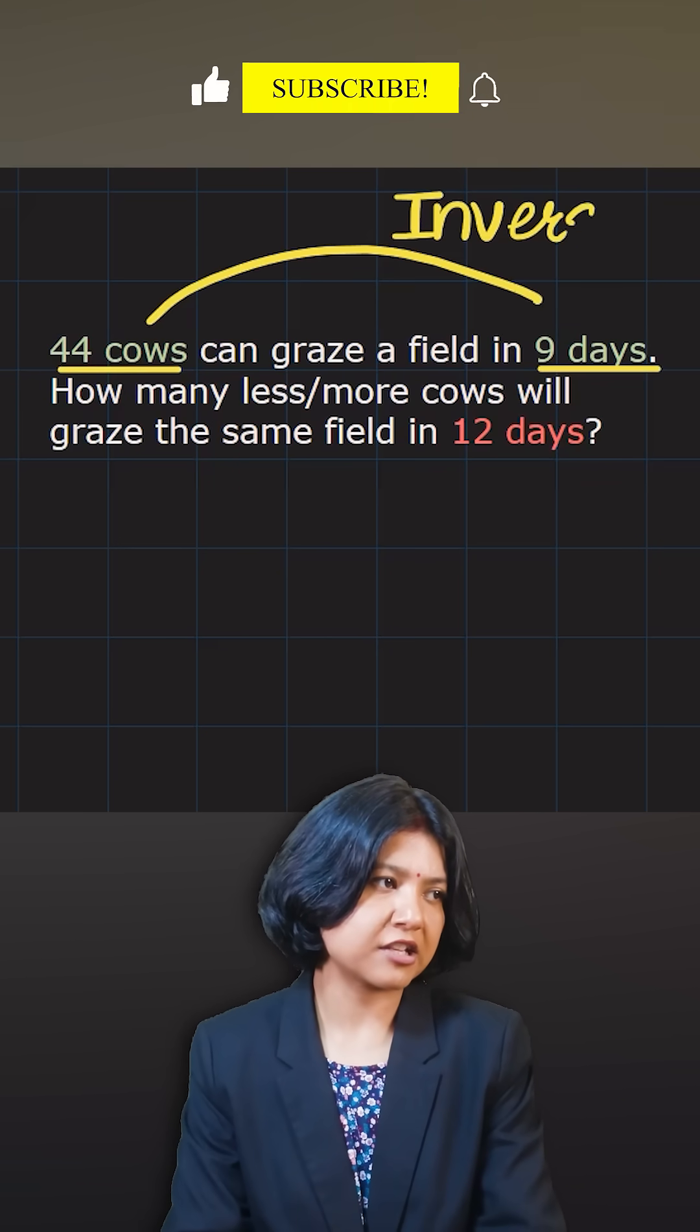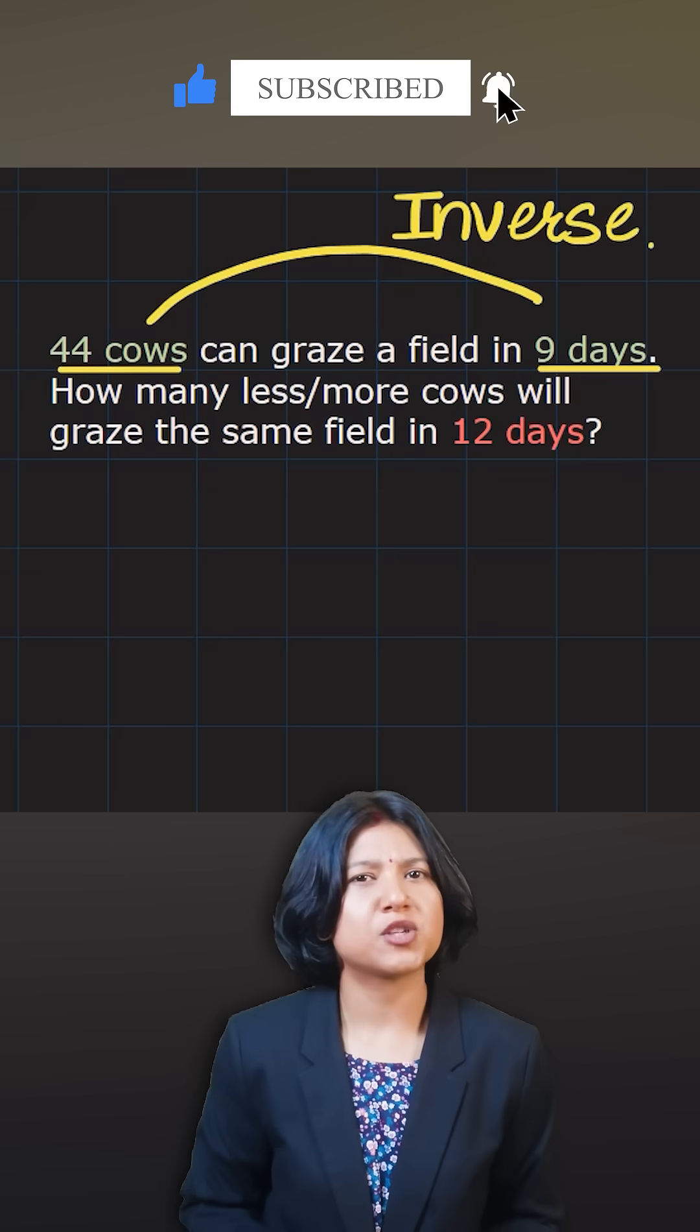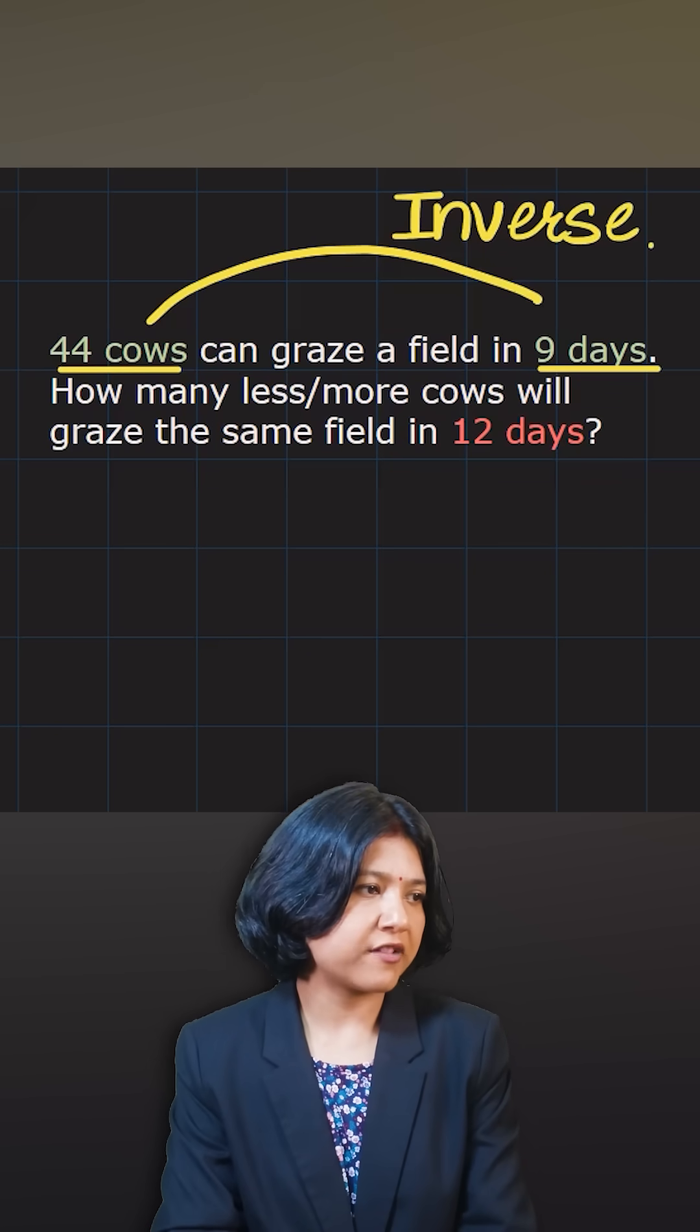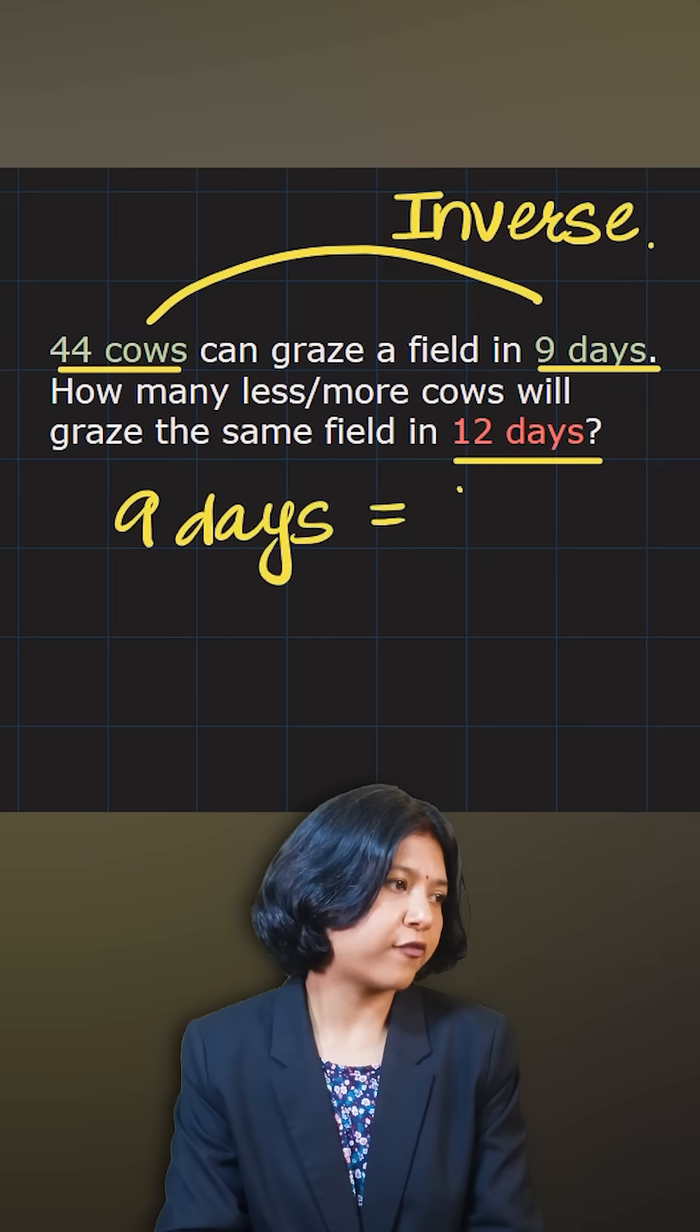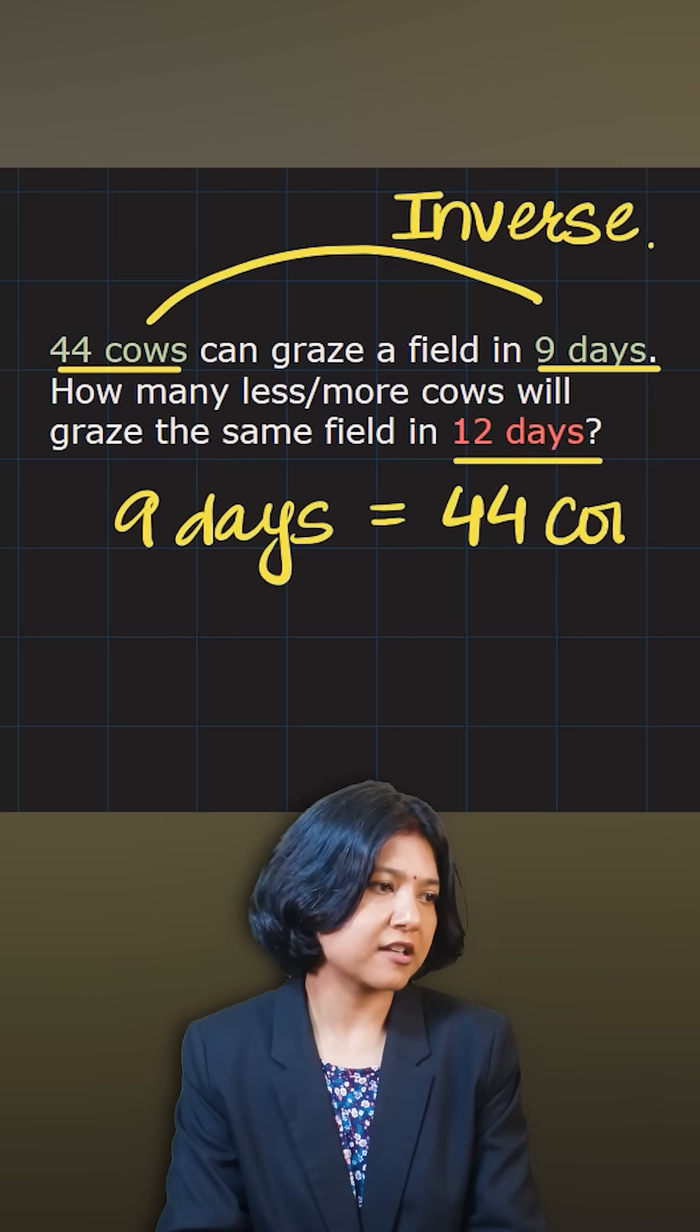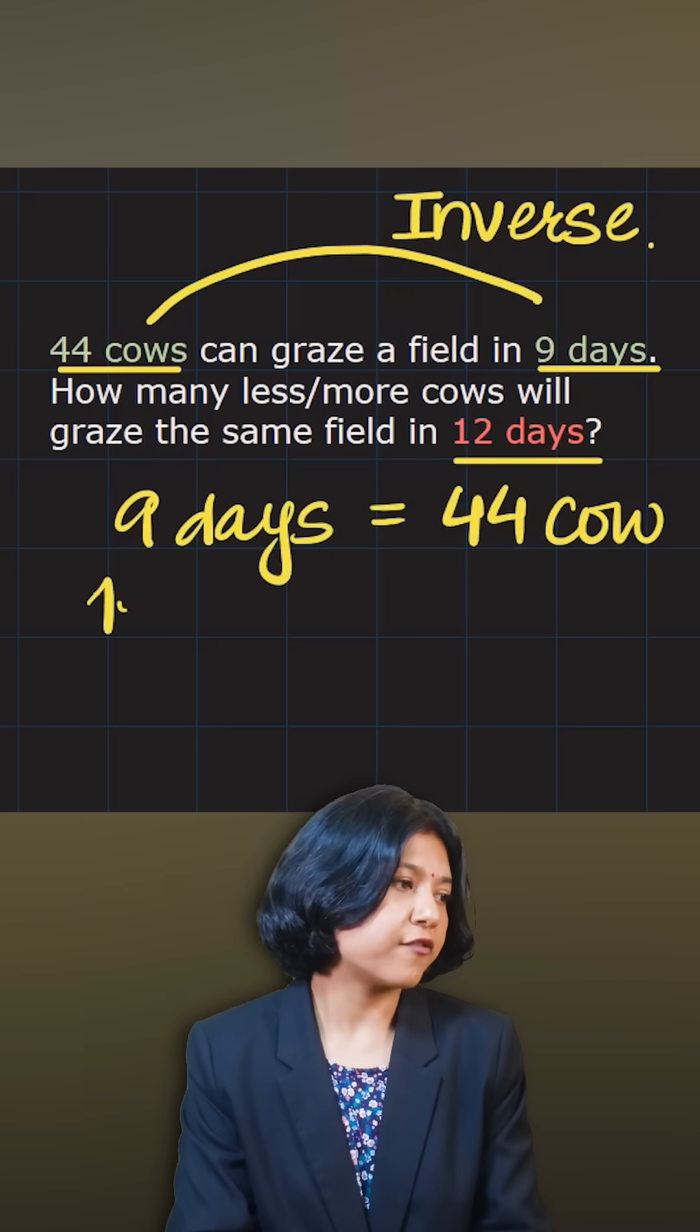When you have the inverse relation, once you identify the relation between the two quantities, you decide. You have the number of days given to you. In nine days, 44 cows will finish grazing a field. We want to find for 12 days.